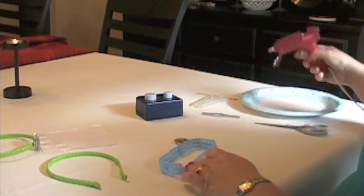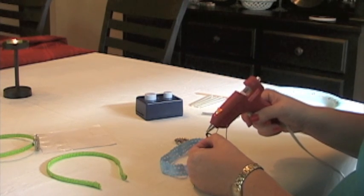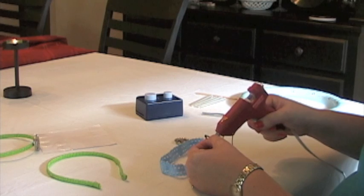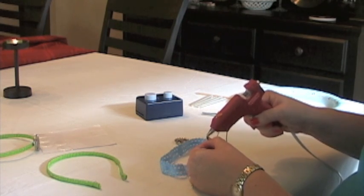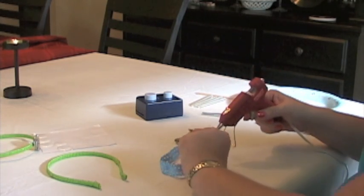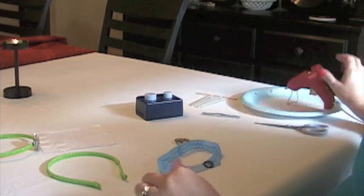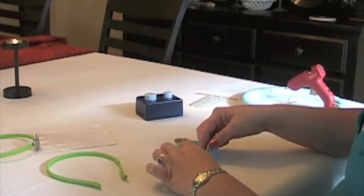You simply take the glue to the washer and stick it down.